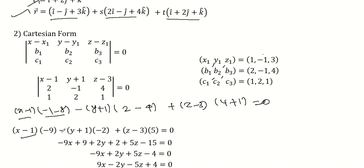When you expand this determinant: x minus 1 times the minor, minus y plus 1 times the minor, plus z minus 3 times the minor equals 0. This gives minus 9x plus 9 plus 2y plus 2 plus 5z minus 15 equals 0.